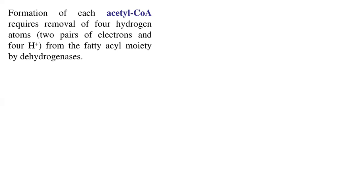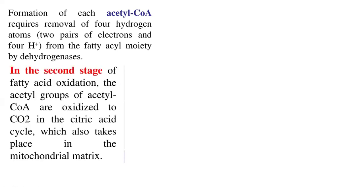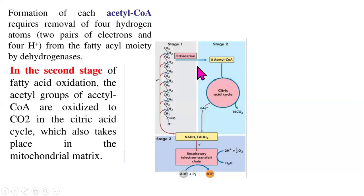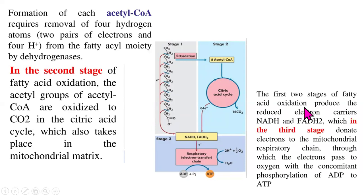Formation of each acetyl-CoA requires removal of four hydrogen atoms — two pairs of electrons — from the fatty acyl moiety by dehydrogenases. In the third stage, NADH and FADH2 donate their electrons to the mitochondrial respiratory chain, through which electrons pass to oxygen with concomitant phosphorylation of ADP to ATP via oxidative phosphorylation. This brings us to the end of this lecture. Coming up next is beta oxidation of saturated fatty acids.